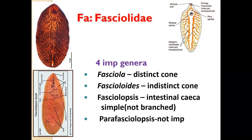The family Fasciolidae contains four important genera: Fasciola, Fascioloides, Fasciolopsis, and Parafasciolopsis. All these flukes are large, flat, and leaf-like. The Fasciola genus has a distinct cone and well-branched intestinal caeca, with two suckers — oral and ventral sucker.